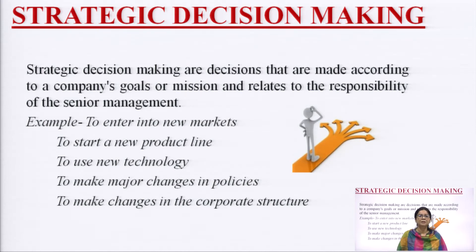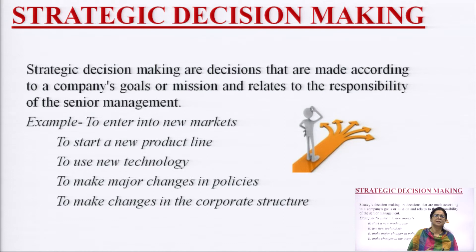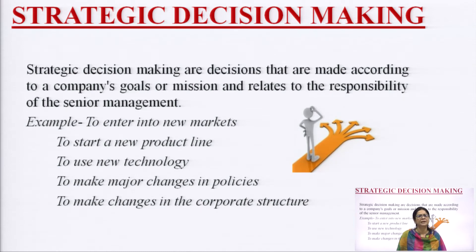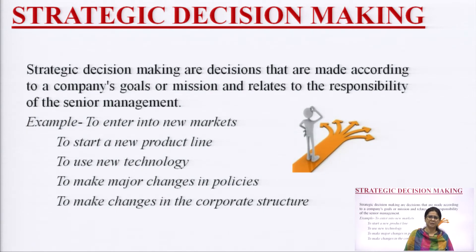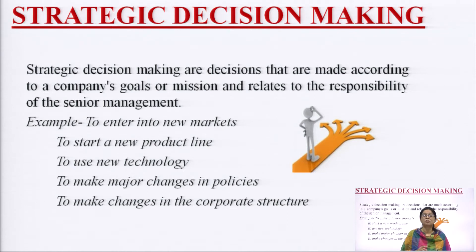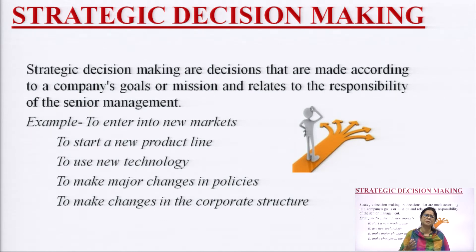What is strategic decision making? It is decision making with three characteristics: rare, consequential, and directive. Rare means something unique — if your decision is of a repetitive or daily nature, it is not strategic. Strategic decision making is only for rare, specific situations. Consequential means there must be an objective and commitment from all levels of management. Directive means there must be a direction to achieve the objective.